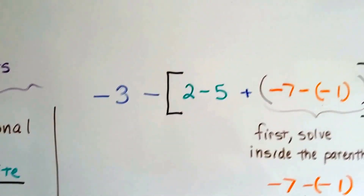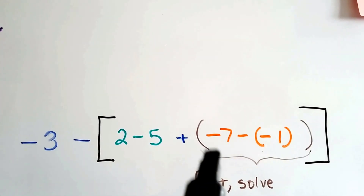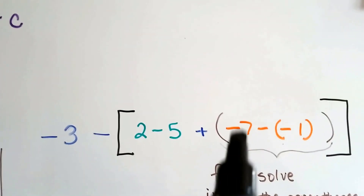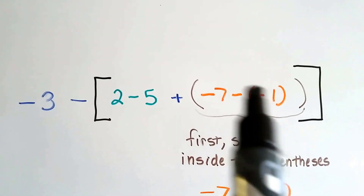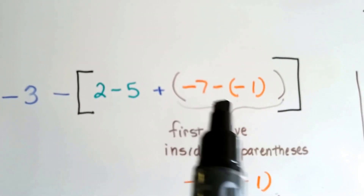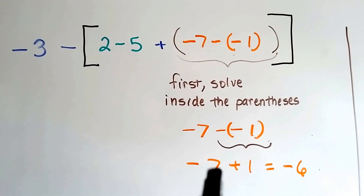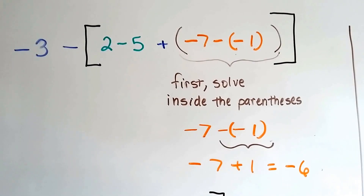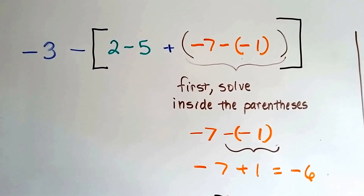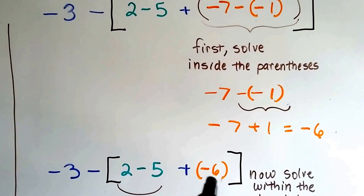So if you saw negative 3 minus, then brackets containing 2 minus 5 plus, and then in parentheses negative 7 minus negative 1 — we would do within the parentheses first. Negative 7 minus a negative 1: we add the opposite, so that becomes negative 7 plus 1, because that's the inverse of an inverse. So negative 7 plus 1 gives us negative 6.